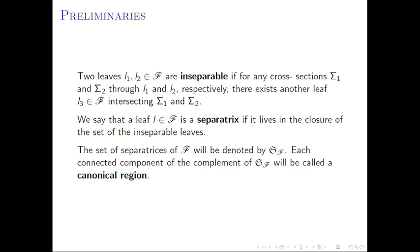Now some preliminaries. Two leaves l1 and l2 of a regular foliation F in the plane are inseparable if for any cross-sections sigma1 and sigma2 through l1 and l2 respectively, there is another leaf l3 intersecting sigma1 and sigma2. We say that a leaf l is a separatrix if it lies in the closure of the set of inseparable leaves. Each connected component of the complement of the set of separatrices of F will be called a canonical region.